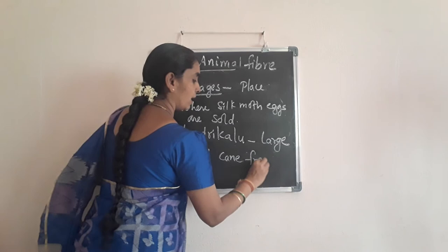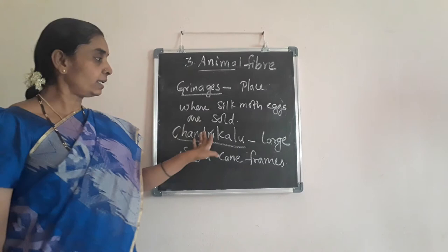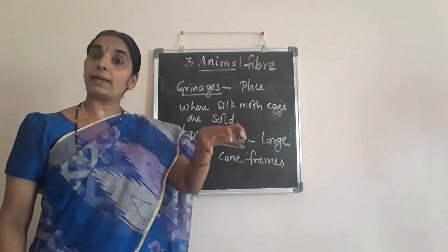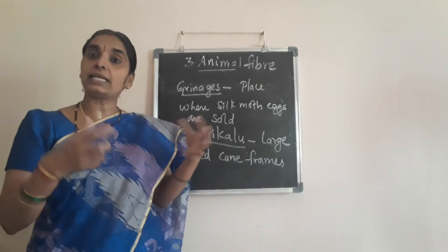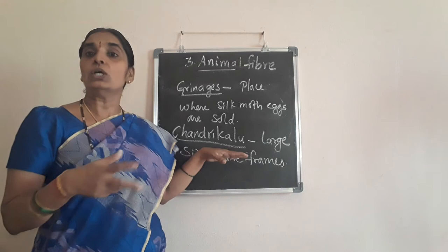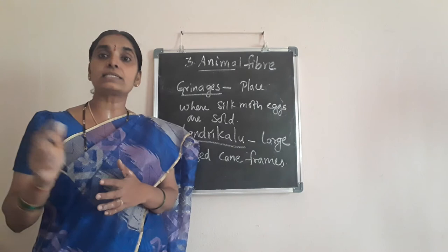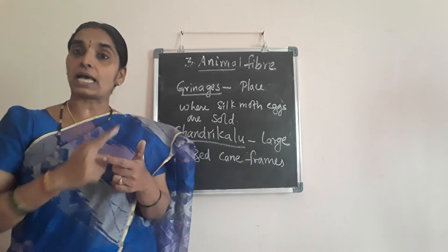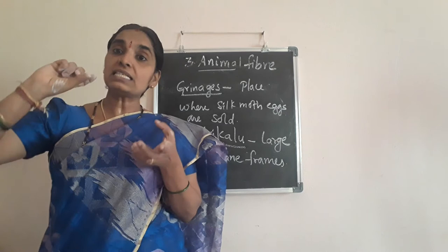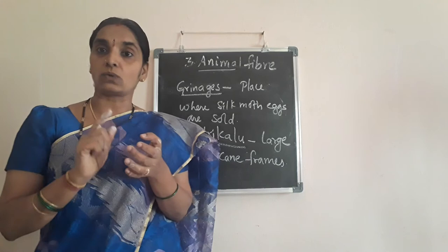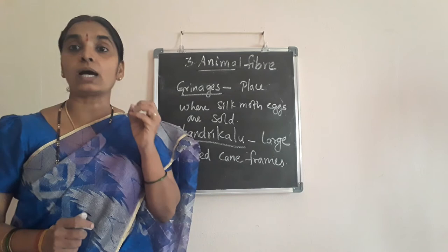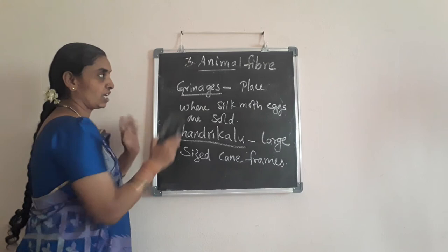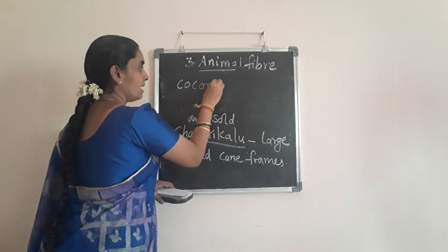After keeping the larvae in the large-sized cane frames called Chandrikalu with finely chopped mulberry leaves, they keep them for about a month so the larvae develop into fully grown larvae. When the larva grows fully, it stops eating mulberry leaves and starts secreting a fluid from its mouth, surrounding its body. When this fluid is exposed to air it becomes strong, and when it completely surrounds the body it forms the cocoon — called Patukkayalu.